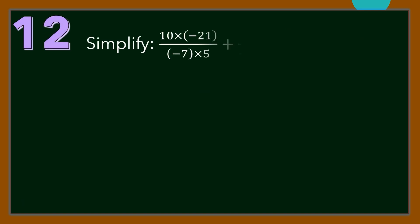Number 12. Simplify 10 times negative 21 over negative 7 times 5, plus 12 squared over negative of 3 squared. For our solution, we are going to use the cancellation method.